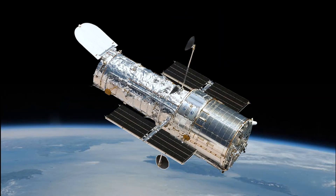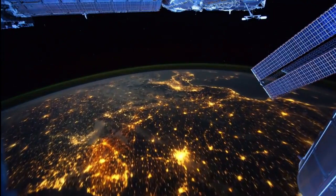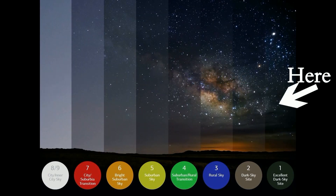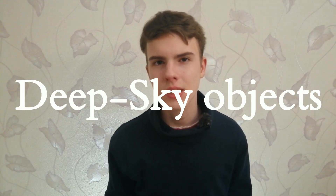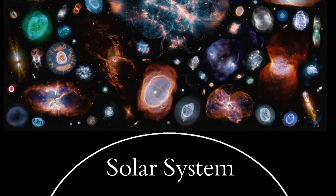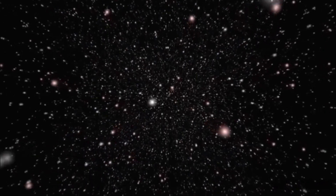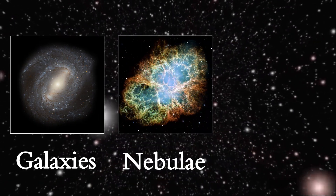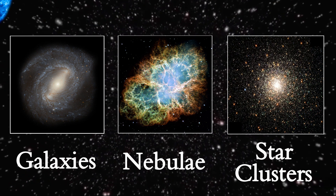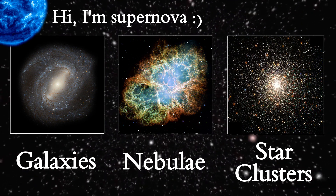Now I will teach you how to observe deep sky objects and share some very useful tips. First of all, we should understand what I mean by the term 'deep sky objects.' Deep sky objects are celestial objects that exist outside our solar system. We can divide them into galaxies, nebulae, and star clusters. A detailed examination of such objects will be made in the next video.